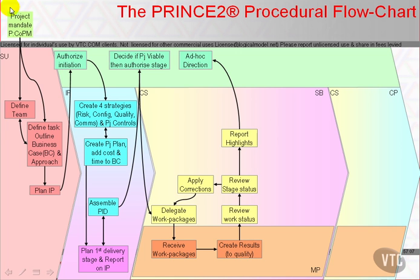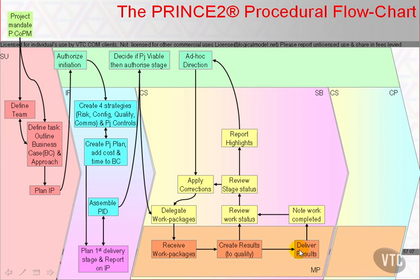On receipt of highlight reports, the project board may choose to apply direction to the project, resulting in corrections, even to the extent of stopping the project if they feel that is appropriate. The team activity will create the results that are to be delivered by this stage, and raise notification via configuration management to inform the project manager's day-to-day routine. That routine includes several potential actions, one of which is to delegate further work packages within the current stage plan's scope.